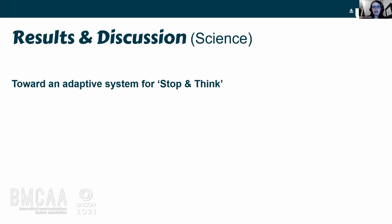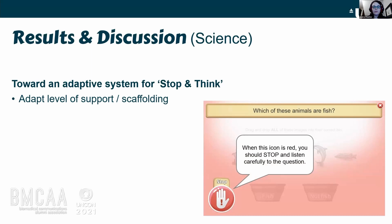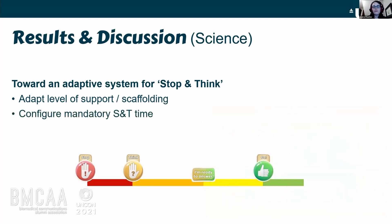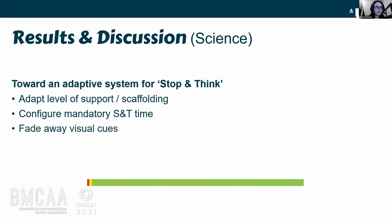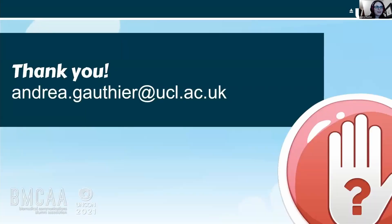The third objective was to conceptualize an adaptive system for the game. The first idea is to adjust the level of scaffolding — if a child repeatedly ignores the icon, tutorial messages could appear during gameplay. Second, we could configure the mandatory stop-and-think time: currently children wait about five seconds before the button appears, and as they become more proficient, we could reduce that time, or increase it if they stop engaging. Finally, we could reduce or fade away those visual cues altogether to transition children towards engaging in these behaviors in a real-world context, which is ultimately the goal of the Stop and Think intervention.